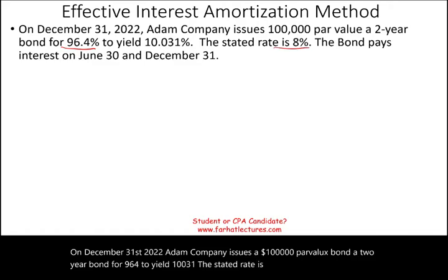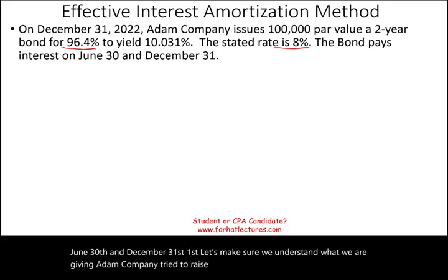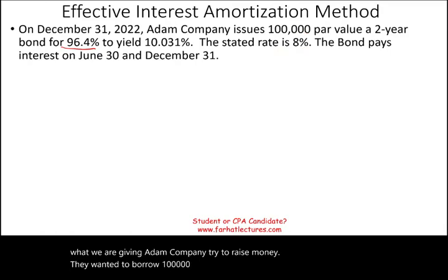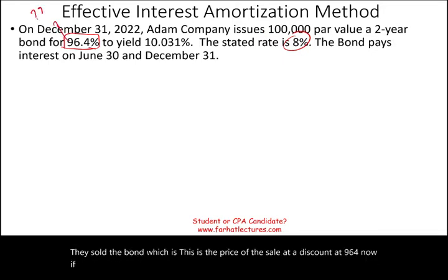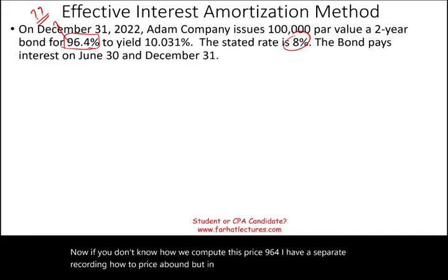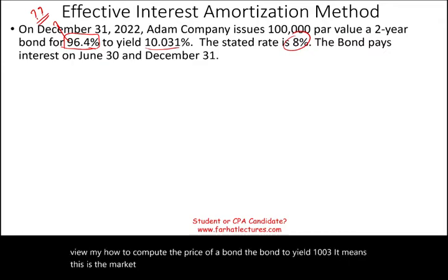The stated rate is 8%. The bond pays interest on June 30th and December 31st. Adam Company tried to raise money — they wanted to borrow $100,000, offering 8% interest semi-annually. They sold the bond at a discount at 96.4. If you don't know how to compute this price, I have a separate recording on how to price a bond. The bond yields 10.031%, which is the market rate for similar bonds, and that's why the bond sold at a discount — because they're offering 8% and the market is 10.031%.